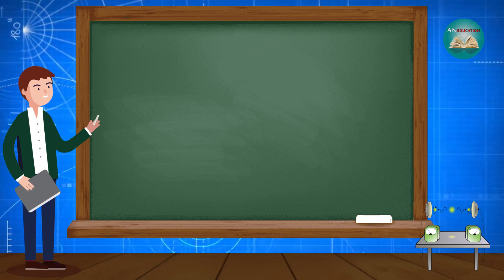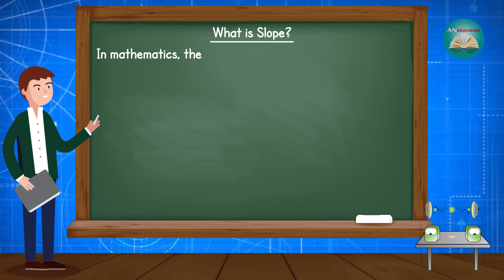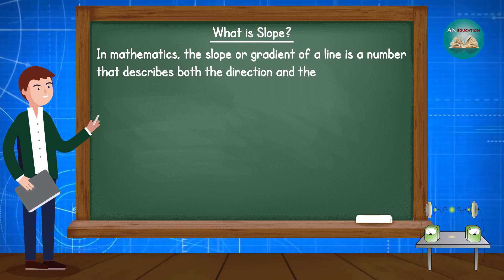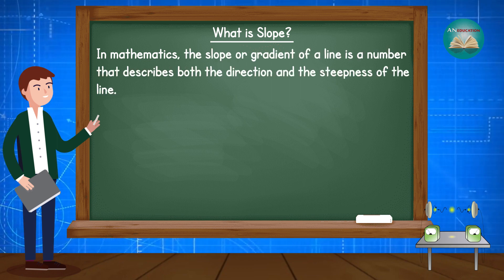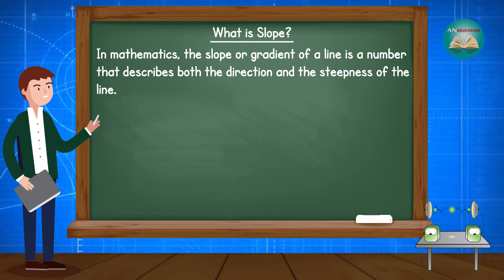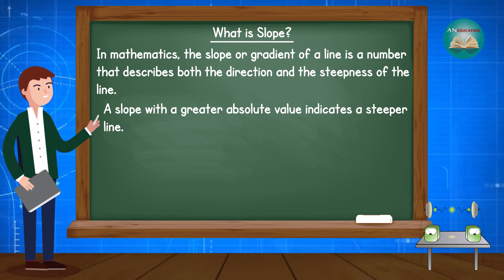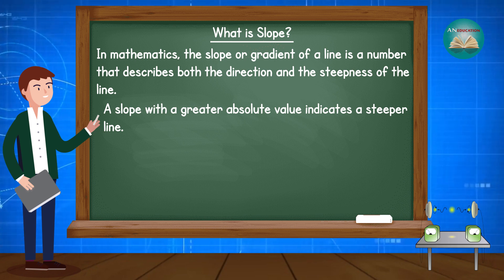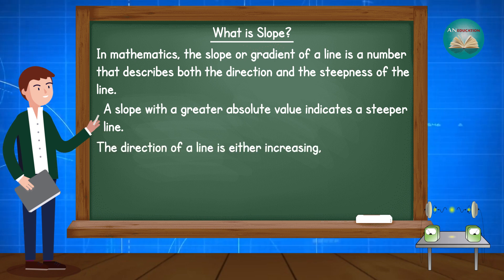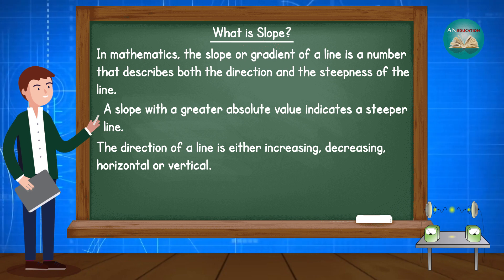Let's understand what slope is. In mathematics, the slope or gradient of a line is a number that describes both the direction and the steepness of the line. A slope with a greater absolute value indicates a steeper line. The direction of a line is either increasing, decreasing, horizontal, or vertical.